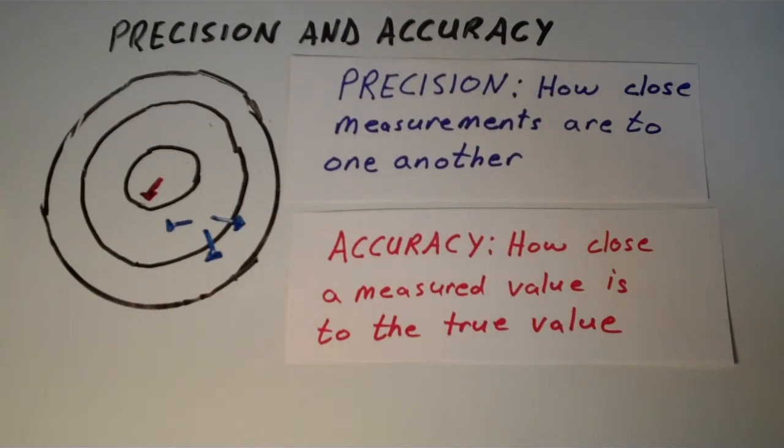Obviously, both precision and accuracy are highly important when performing any kind of chemical measurements. But yeah, the main point is that they are two different definitions altogether, and that's it.